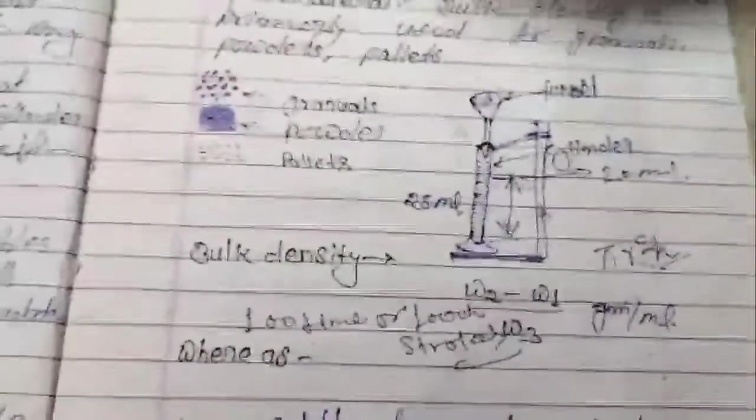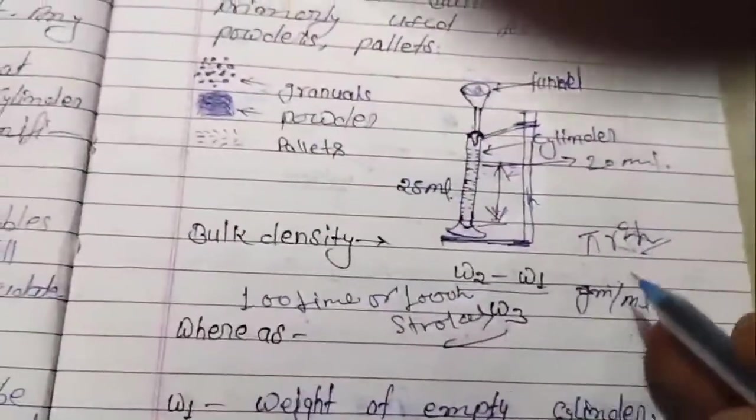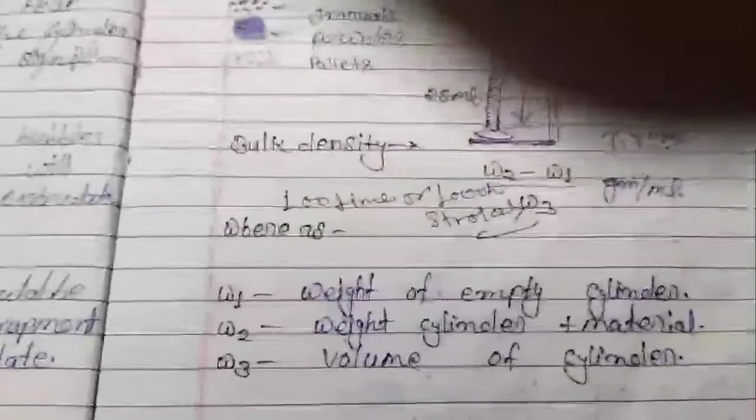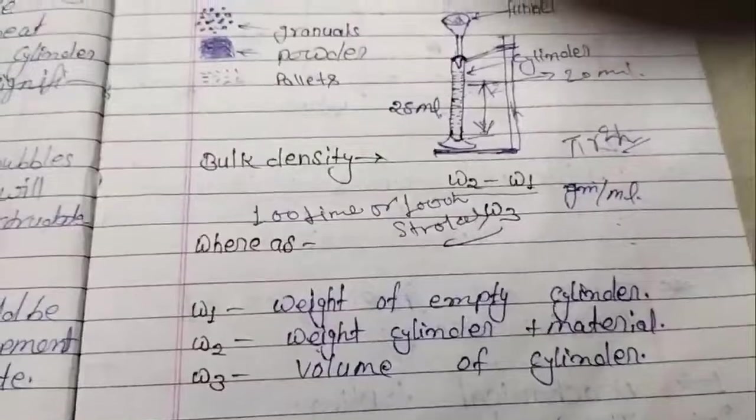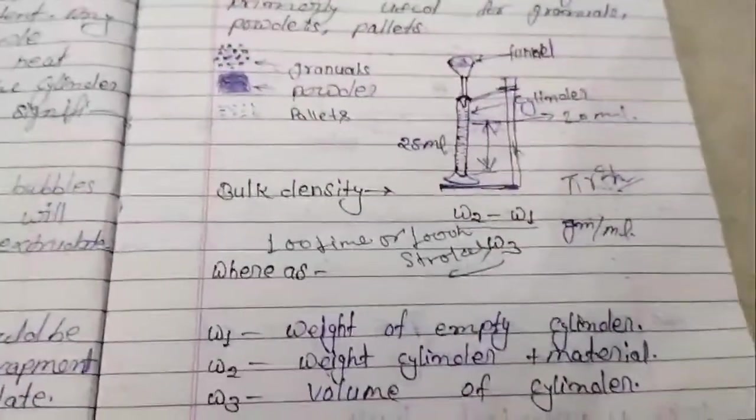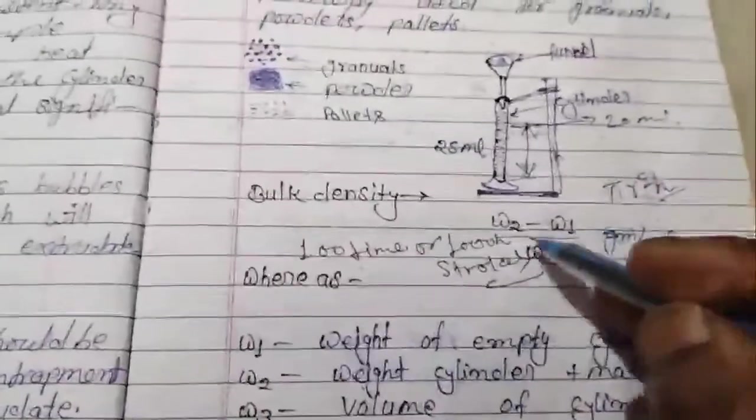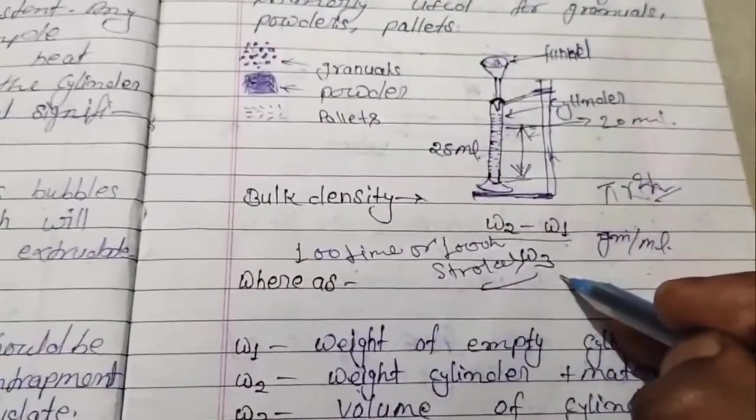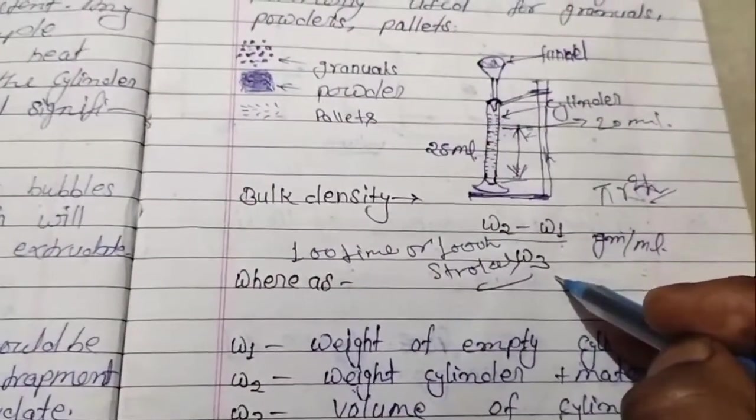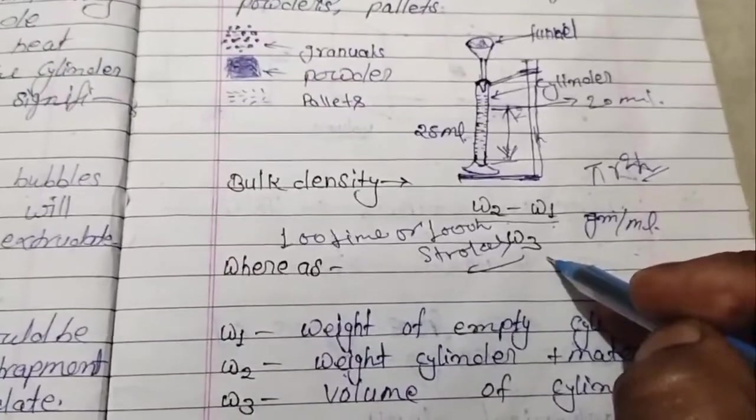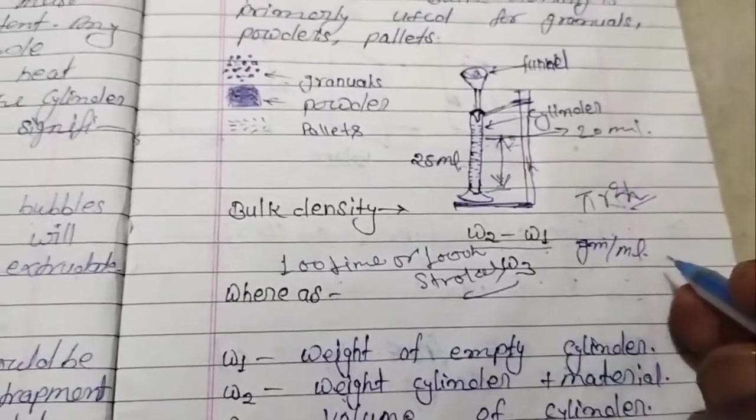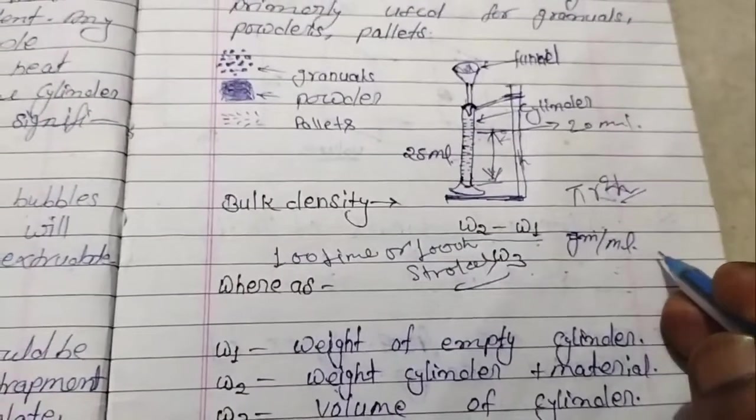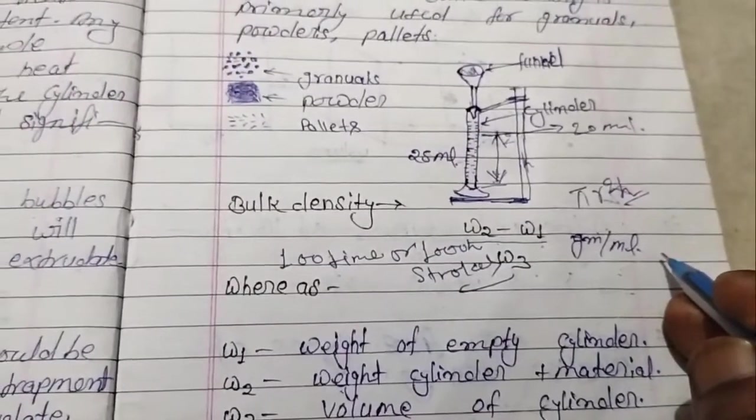We calculate using π r² h. We measure the value difference between W3 before and after. We put the values in the formula: (W2 - W1) / W3. The final bulk density is in grams per milliliter. Now we will show you the apparatus.